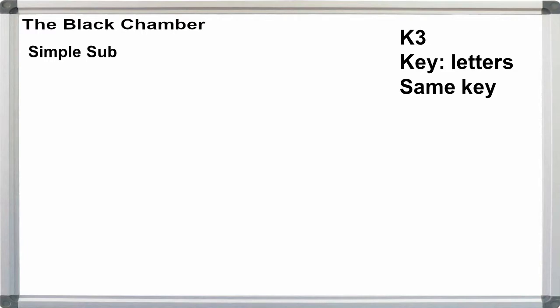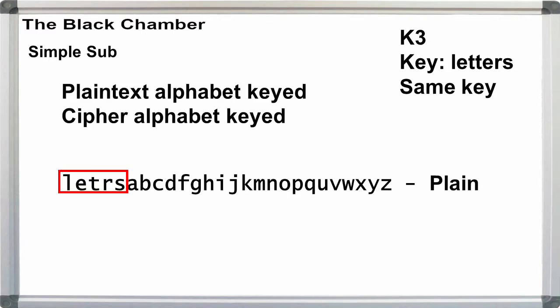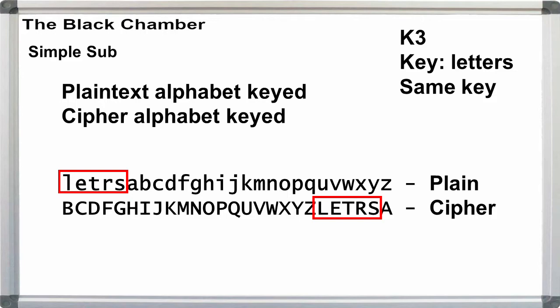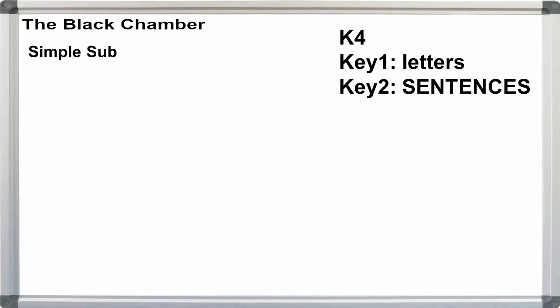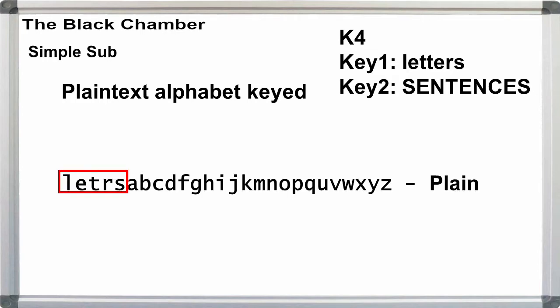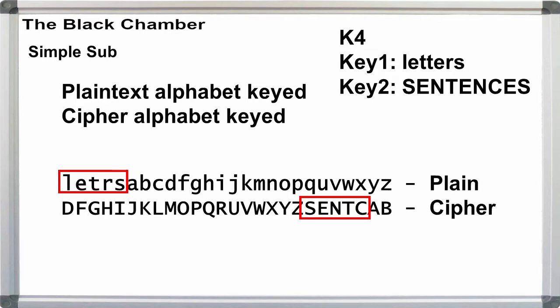For K3, both alphabets are keyed with the same key. And with K4, both alphabets are keyed, but with different keys. Here, our second keyword is sentences.